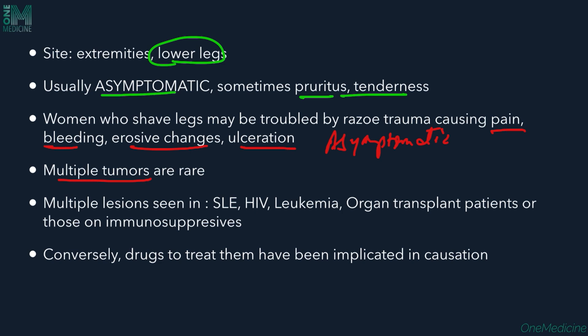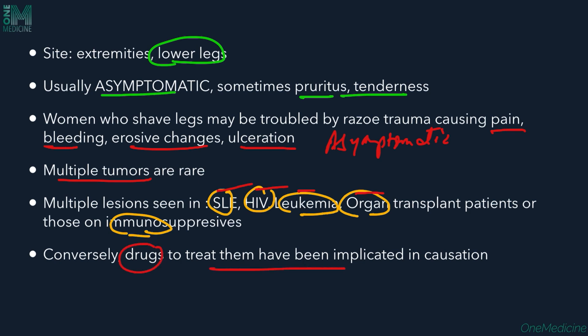Multiple tumors are very rare; usually only solitary lesions are seen. If multiple lesions are present, one must suspect SLE, other autoimmune disorders, or immunodeficiency states such as HIV, leukemia, organ transplantation, or immunosuppressive therapy. It is said that treating these conditions may reduce lesions, though paradoxically the drugs used can also exacerbate them.